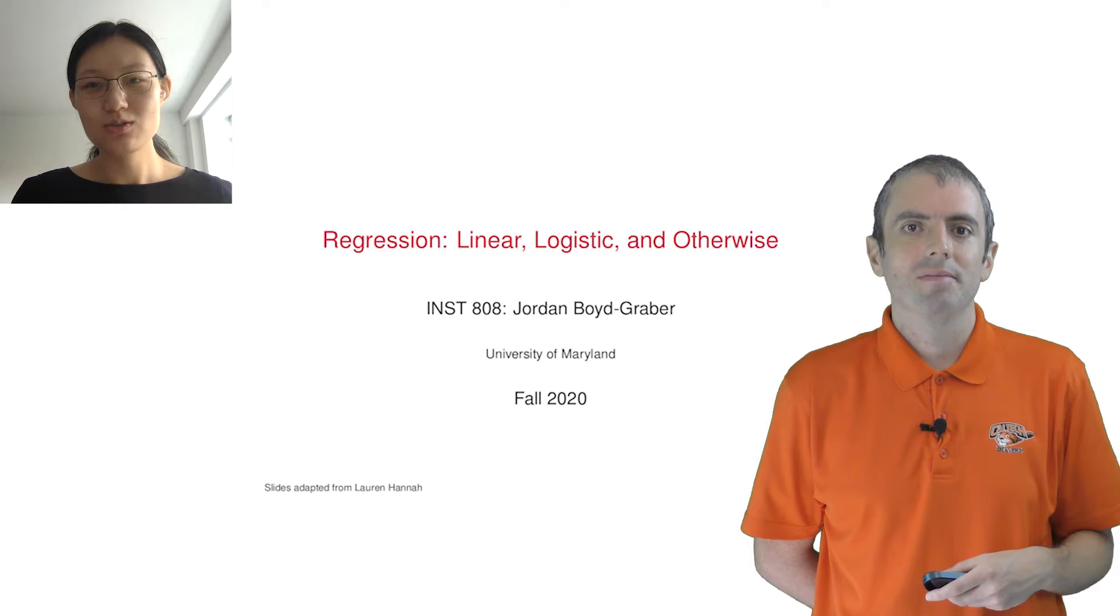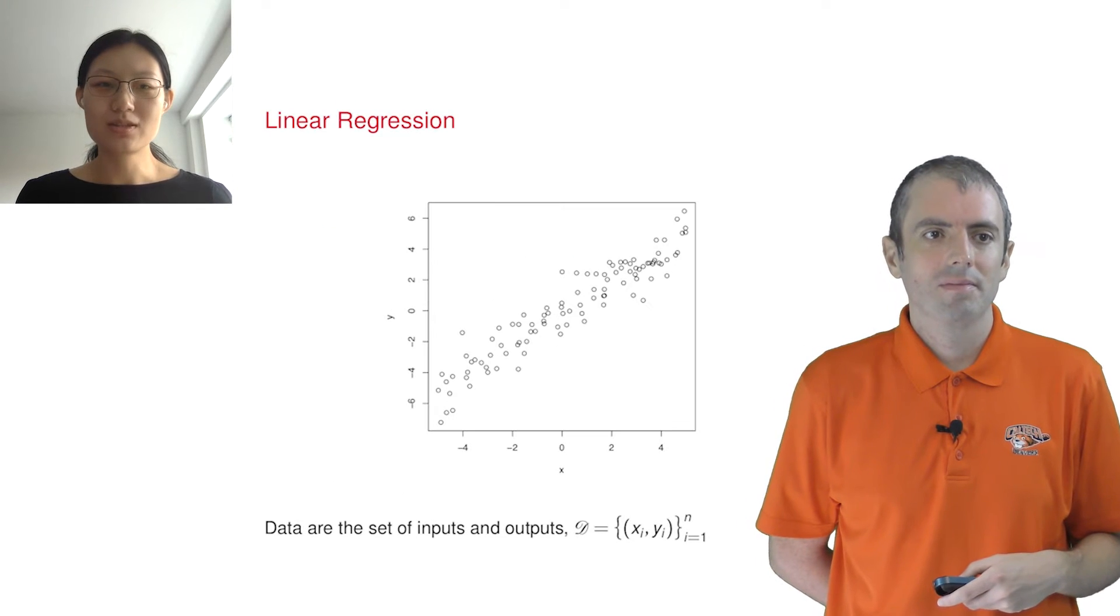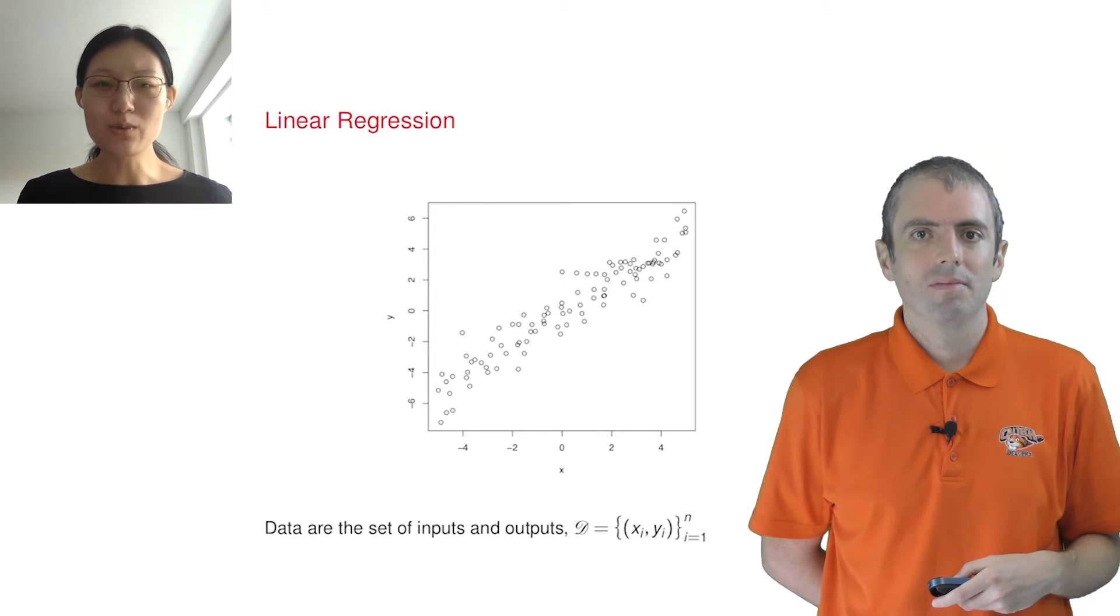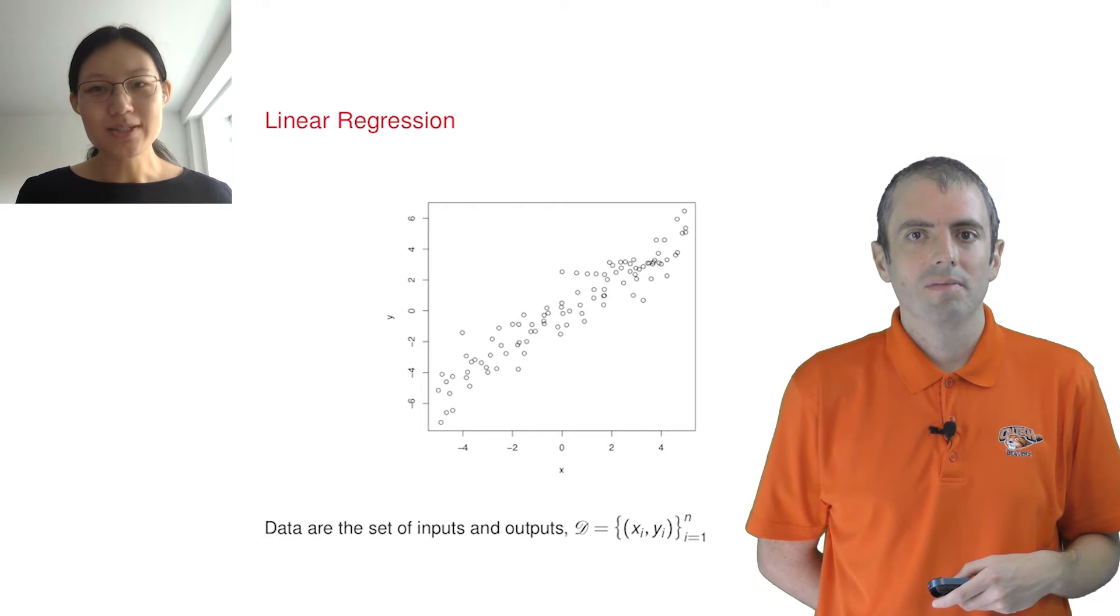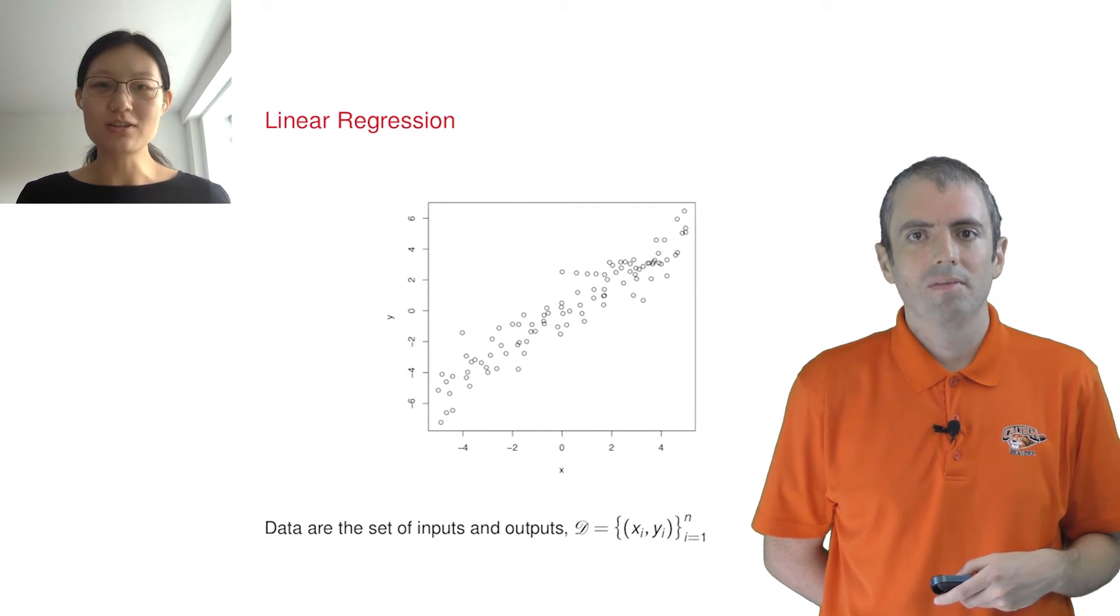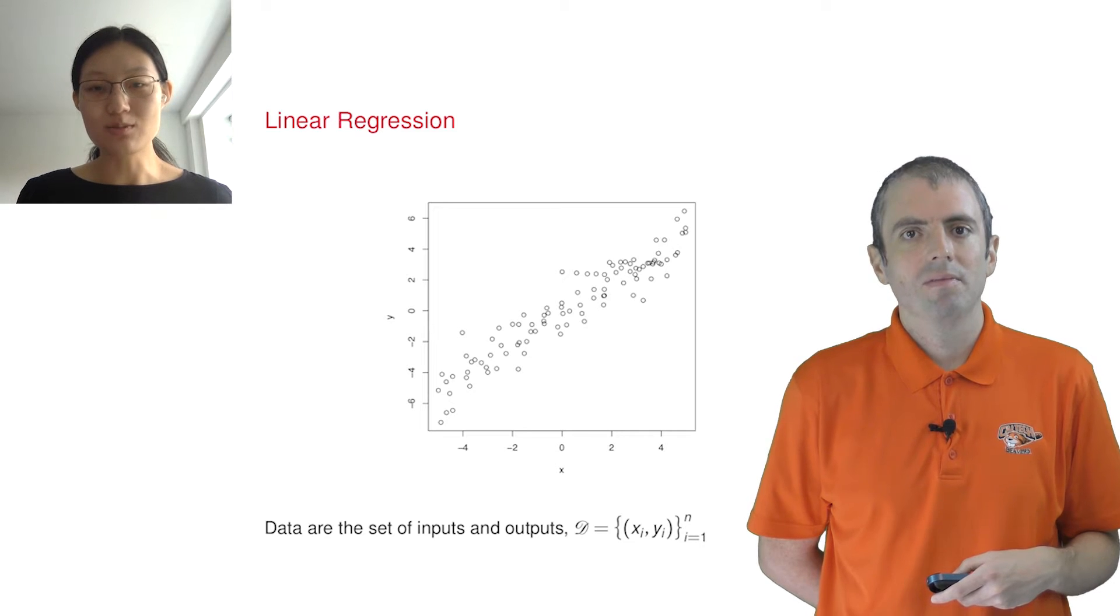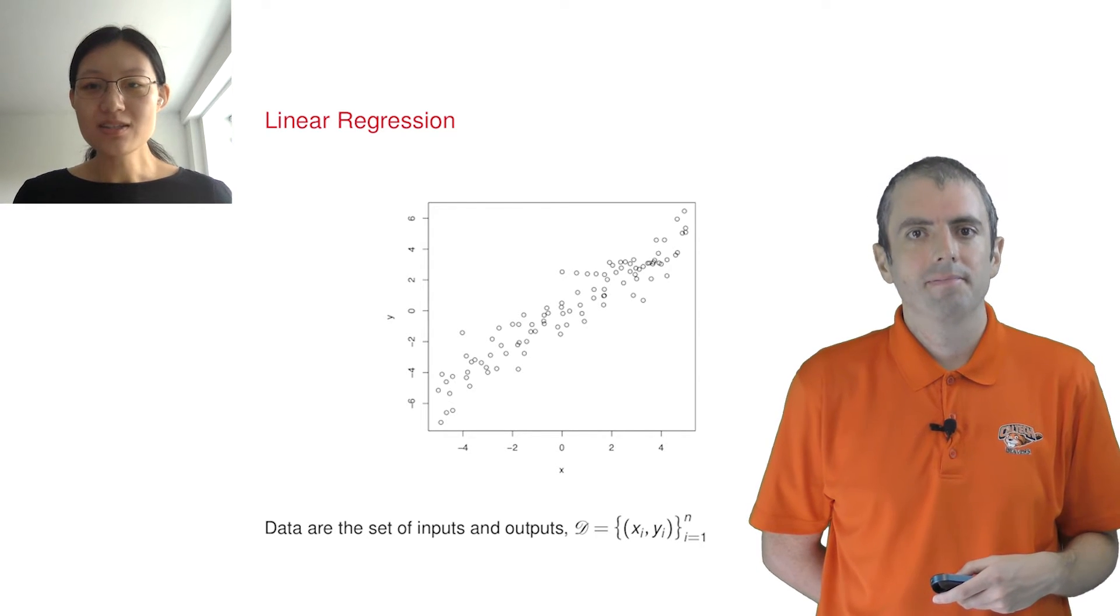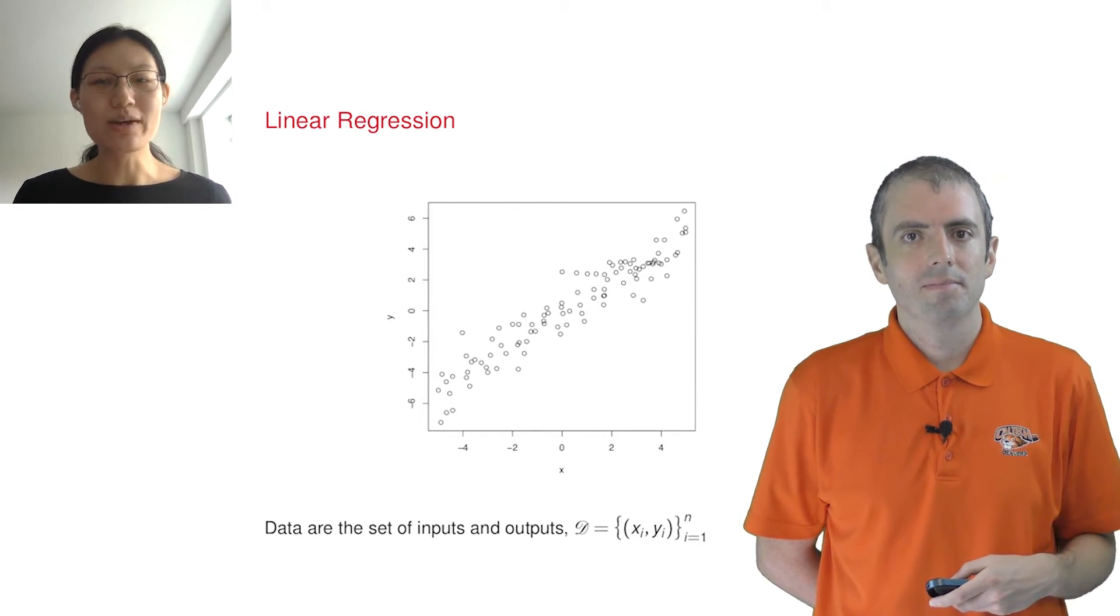For real applications, you probably want to have multiple inputs, which makes it a little more complicated. For example, to predict a child's height, age and gender, two inputs to make the prediction. But let's see what the math looks like with just one input.